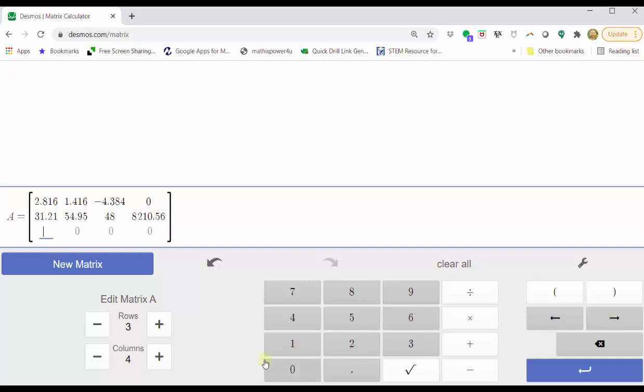And for the last row, we have 1, -3, 0, 0. Enter.